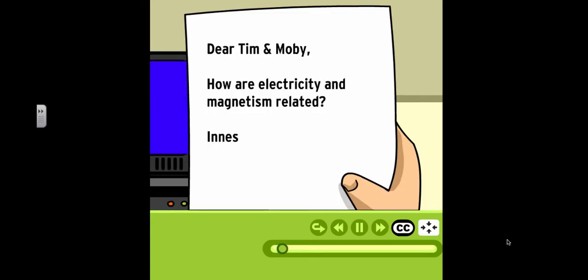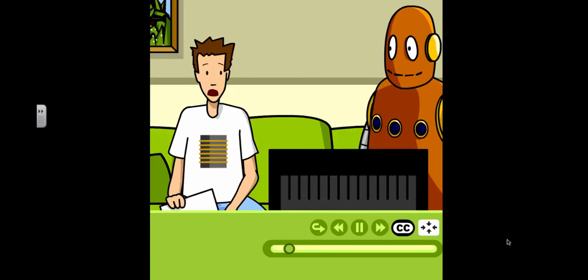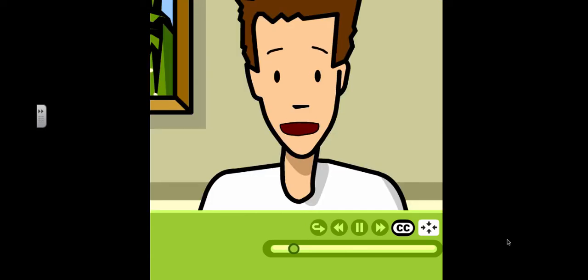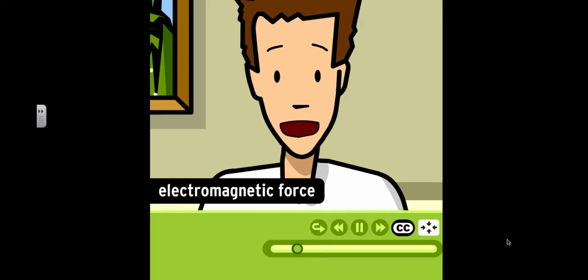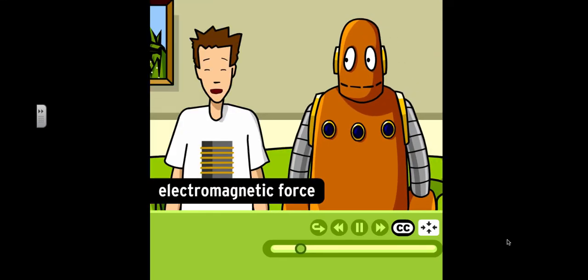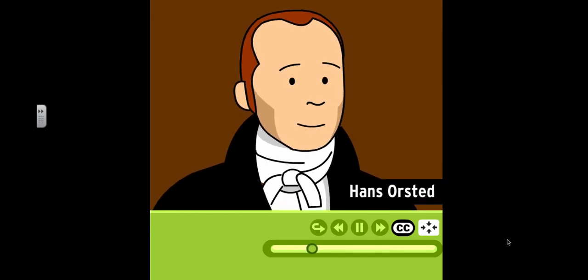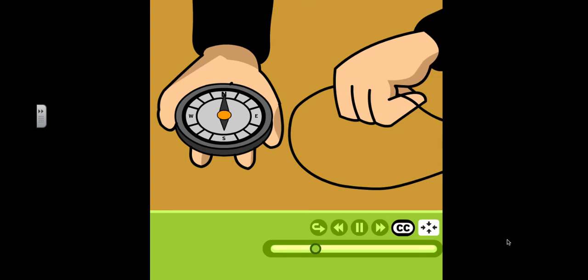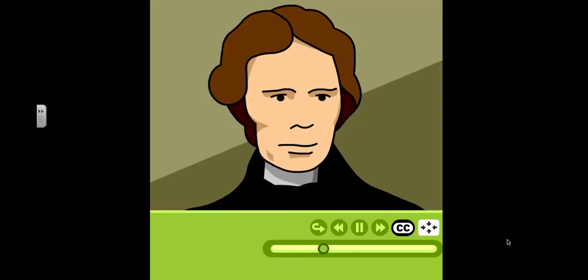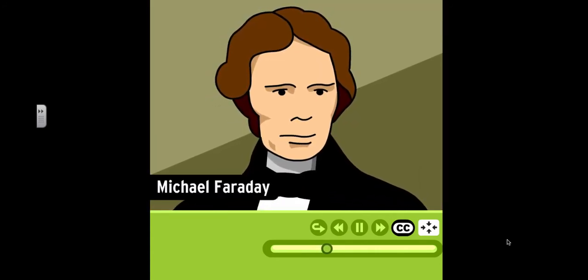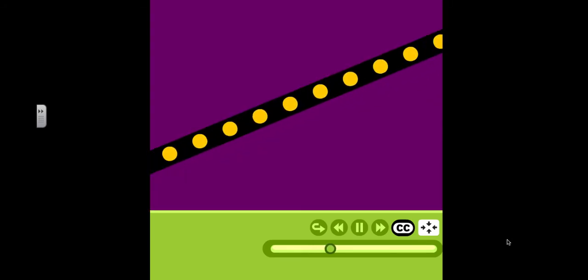Dear Tim and Moby, how are electricity and magnetism related? From Inez. Electricity and magnetism are really two sides of the same force, the electromagnetic force. Basically, that means that electricity can be converted to magnetism, and vice versa. The connection between the two forces was originally detected in 1820 by a Danish chemist named Hans Orsted. He observed that a wire with electricity running through it would make a compass needle move. But he had no idea what this finding meant. A decade later, a British scientist named Michael Faraday built on Orsted's work.